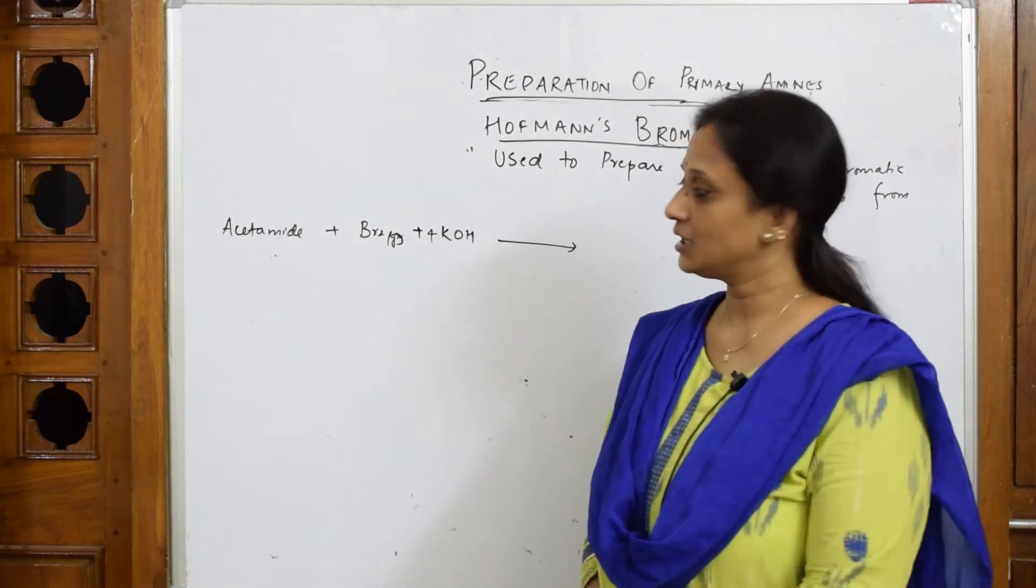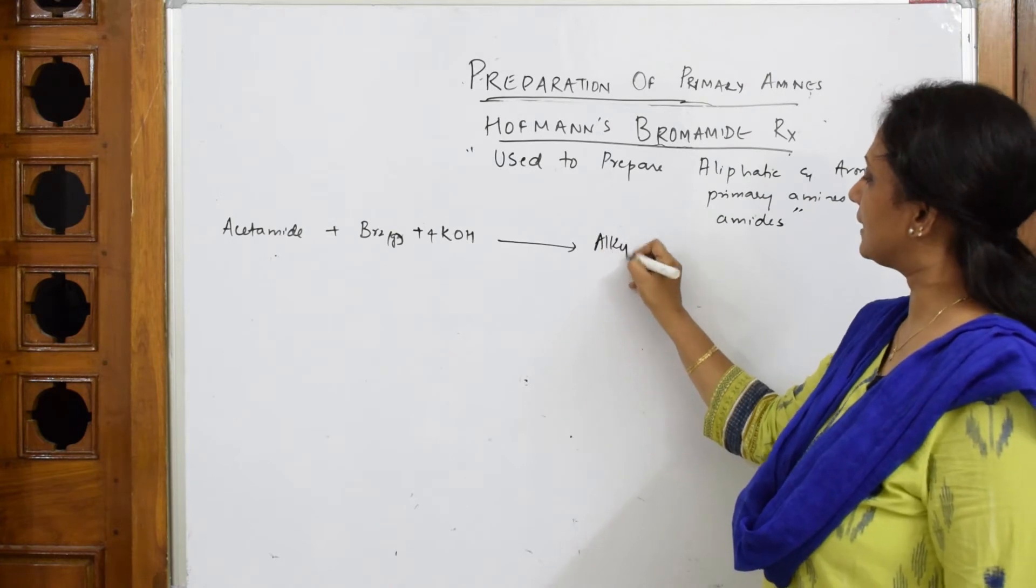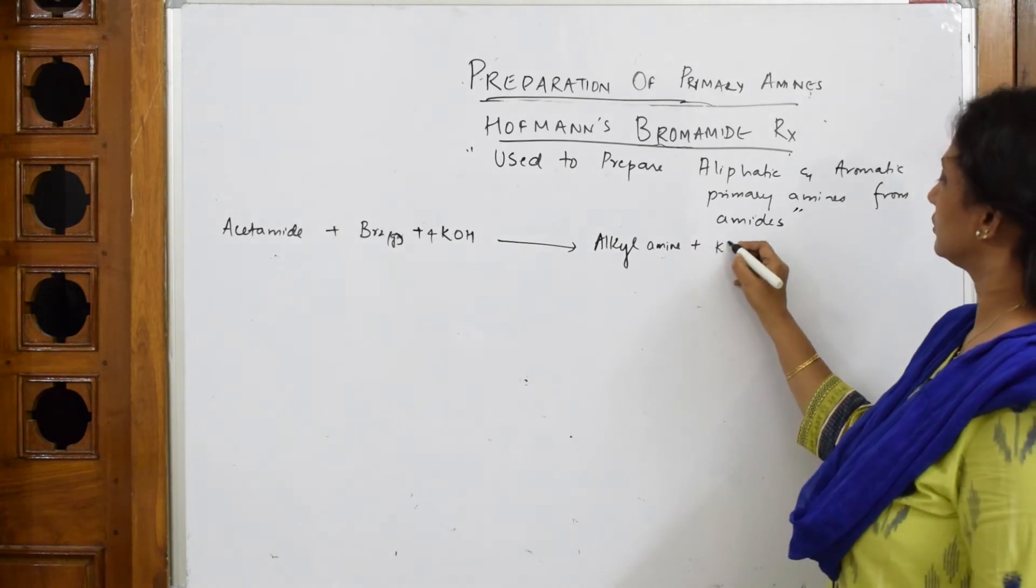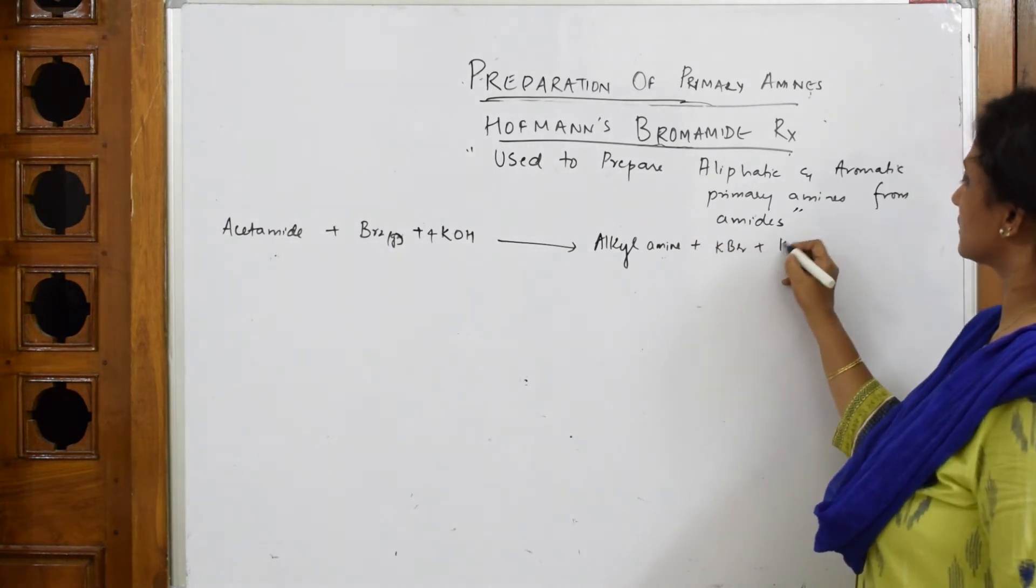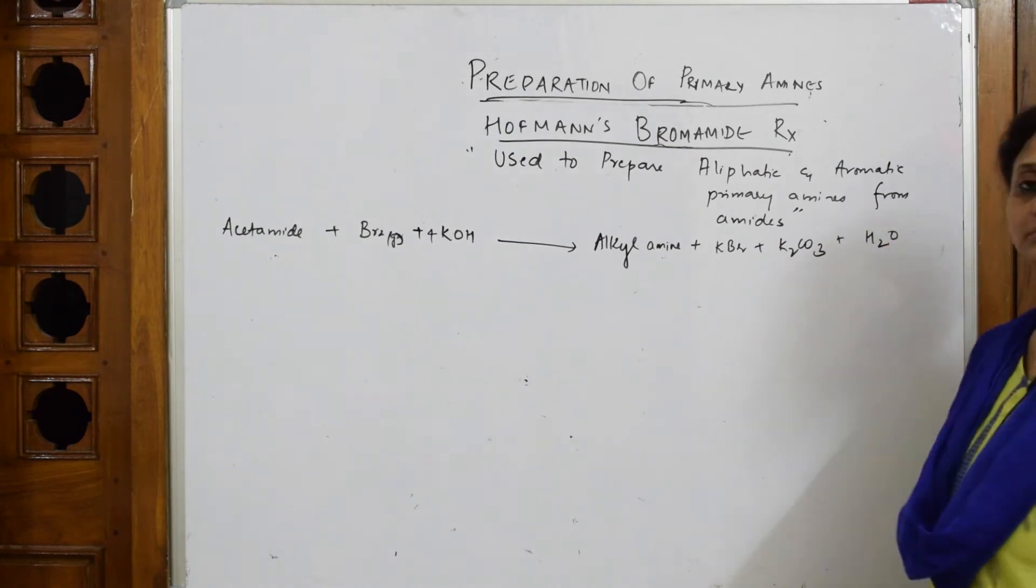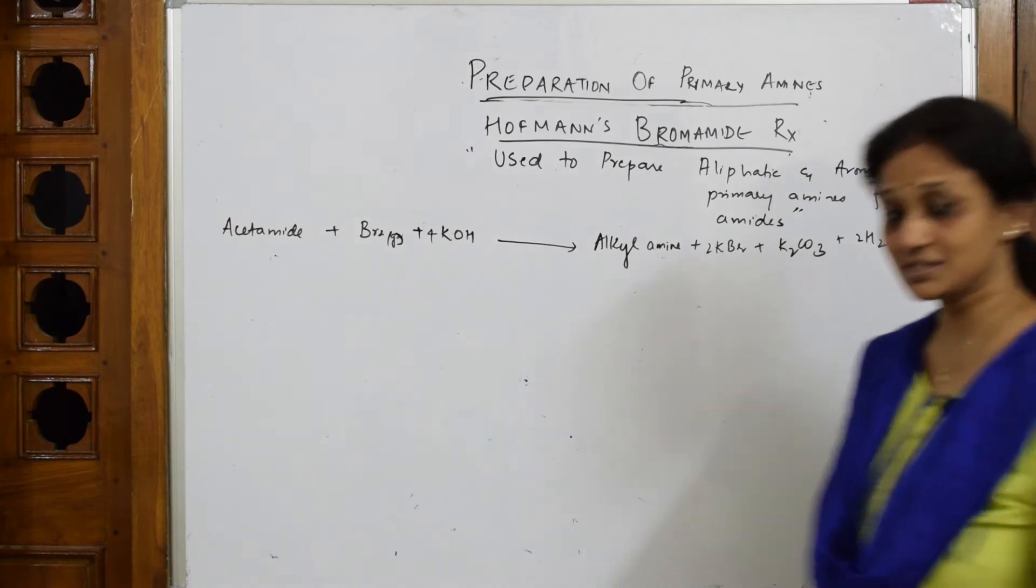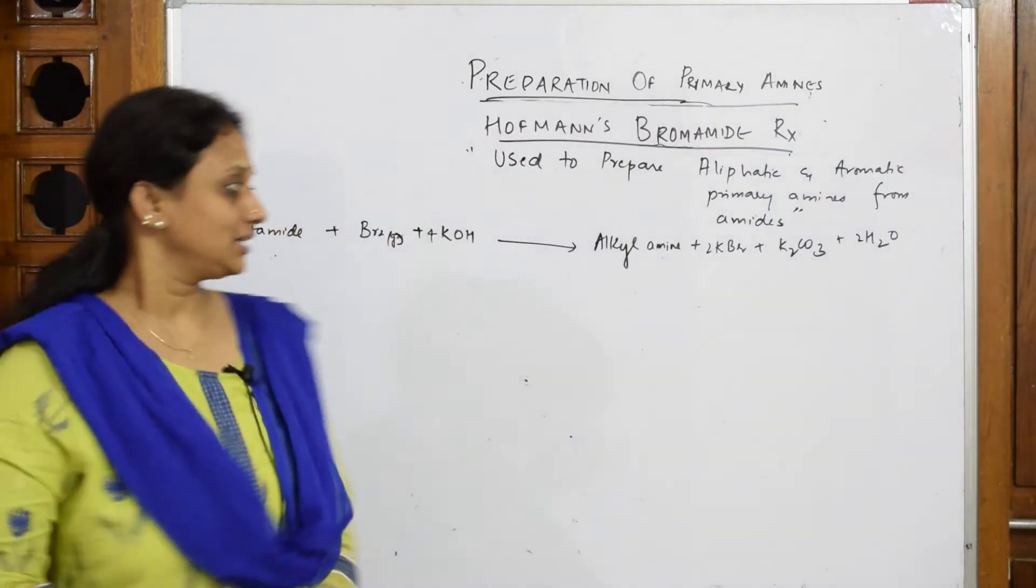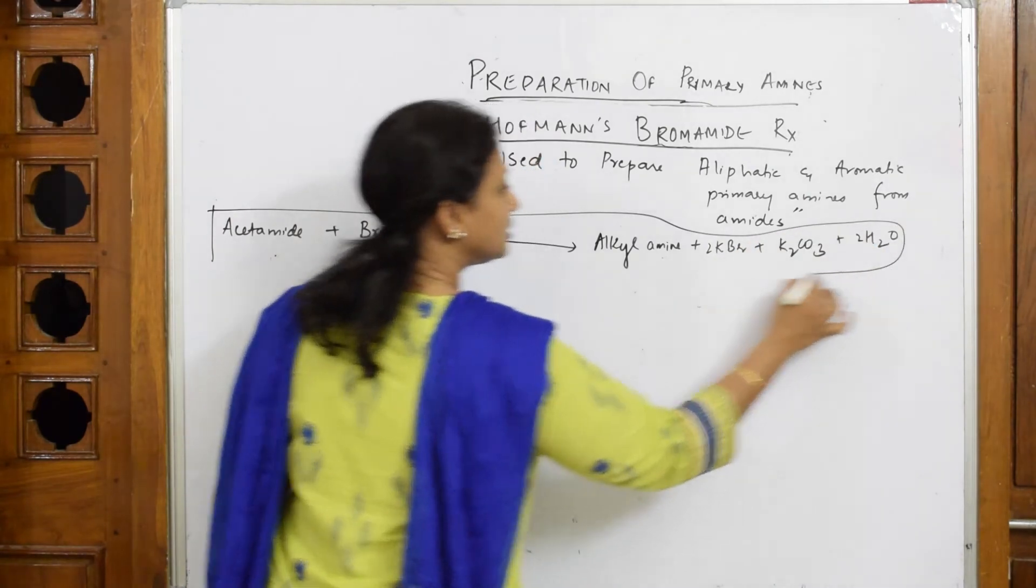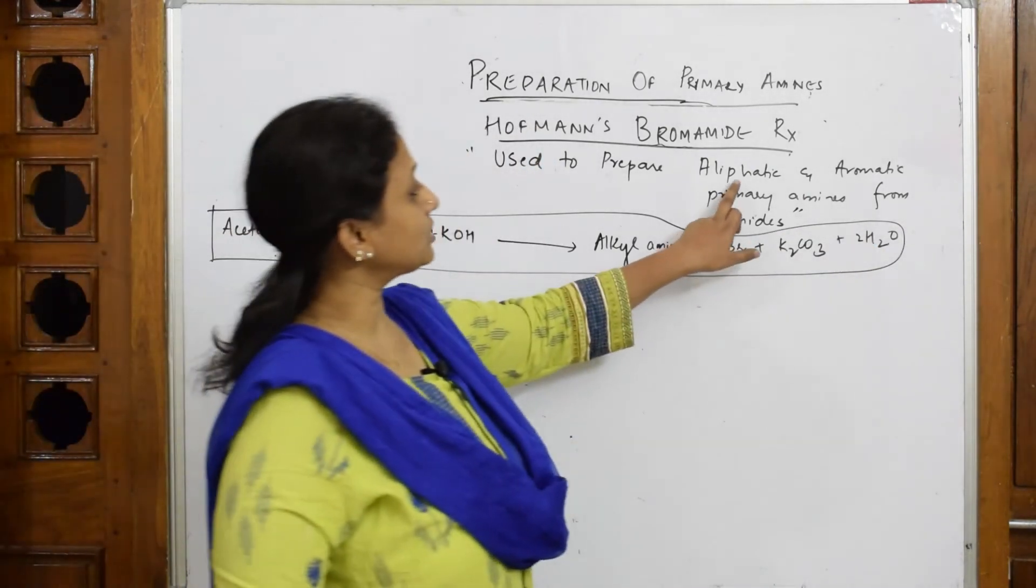Then you get a product called alkyl amine plus KBr plus K2CO3 plus water. When you balance this, this is the basic reaction. In the exam you have to show this reaction with examples. It's going to prepare both aliphatic and aromatic amine.